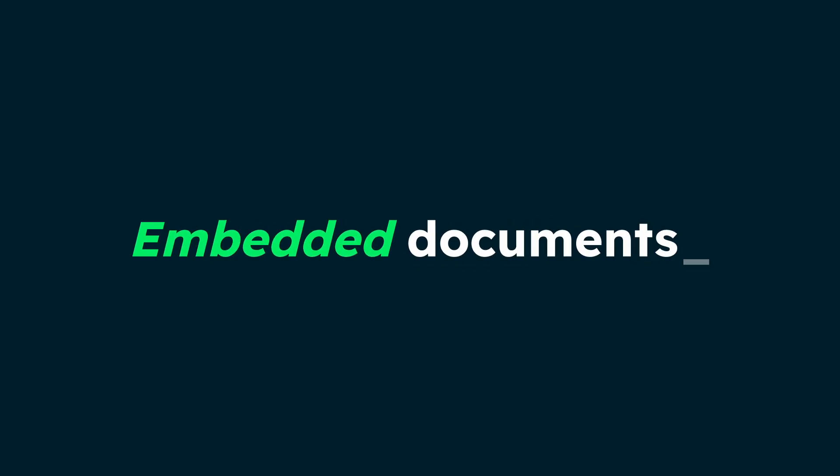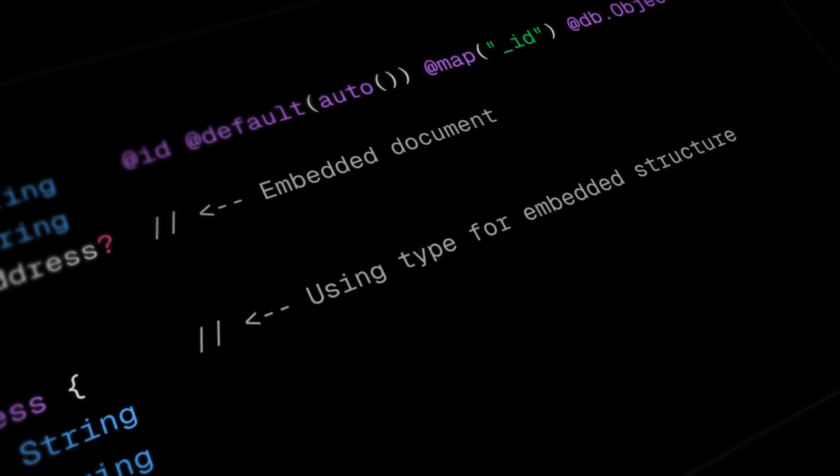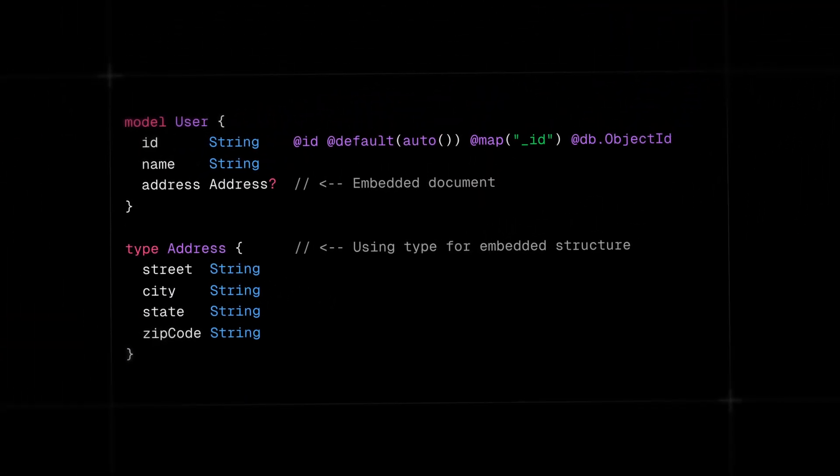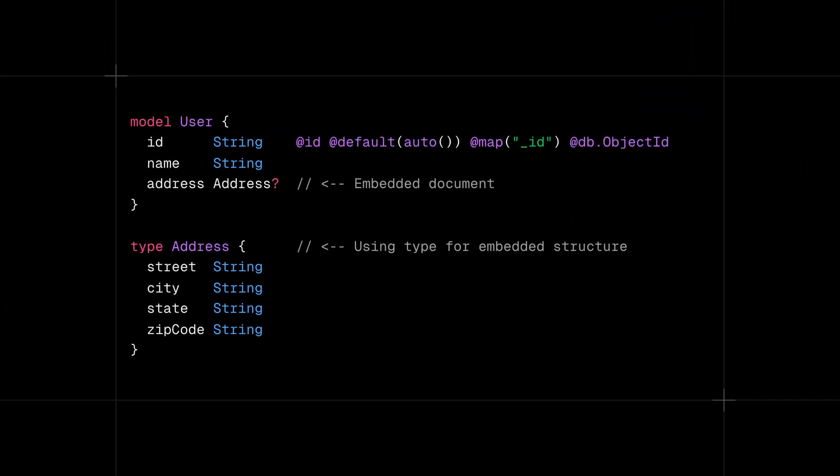The first option is embedded documents. Embedding should be the default approach in MongoDB. Prisma ORM supports this pattern using the type attribute, which directly stores related data within the parent document. This pattern stores the address data directly within the user document, providing faster reads and writes for data that belongs together. When you query a user, you automatically get their address without additional database operations.